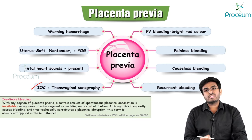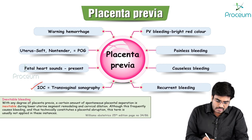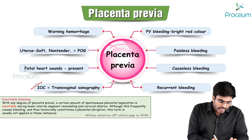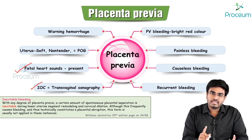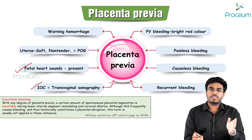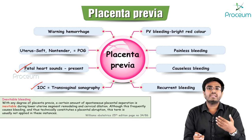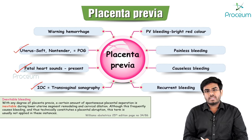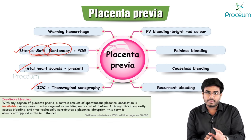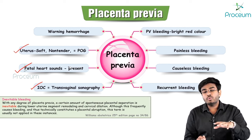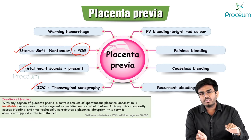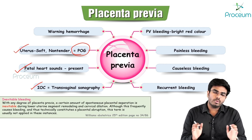The investigation of choice is transvaginal ultrasonography. With placenta previa, fetal heart sounds are usually present because the bleeding is usually small. On palpation, the uterus is soft and non-tender (no pain), and the uterine size is equal to the period of gestation with a live baby inside. The uterus is soft and globular.